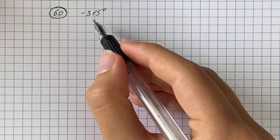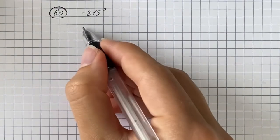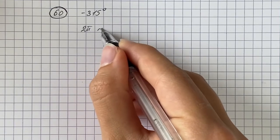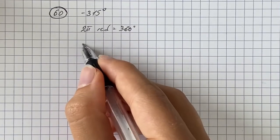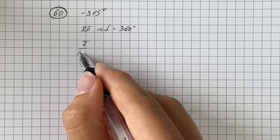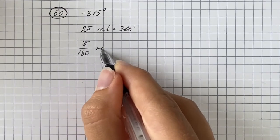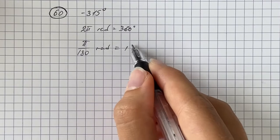Now we have to convert negative 315 degrees. We're going to use the relationship that 2 pi radians equals 360 degrees, and from that we get the conversion formula that pi over 180 radians equals 1 degree.